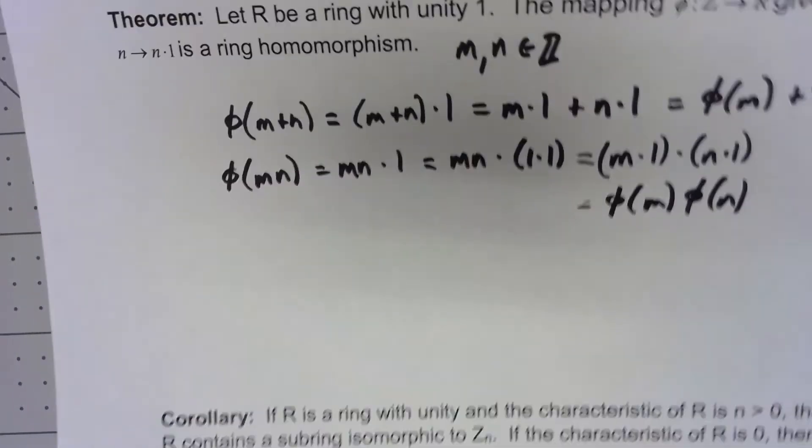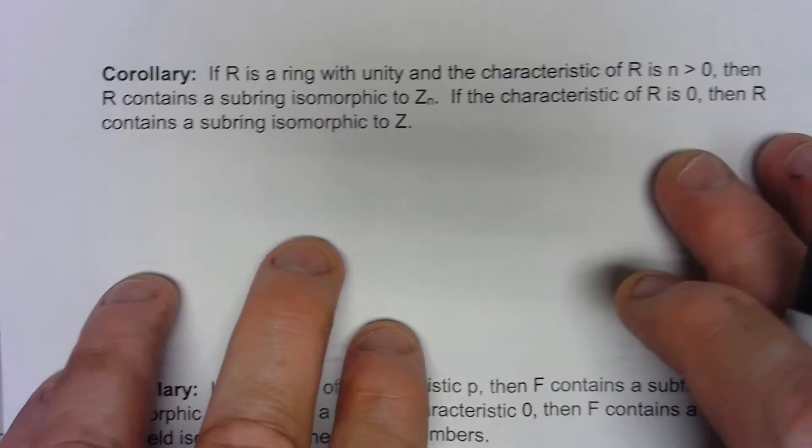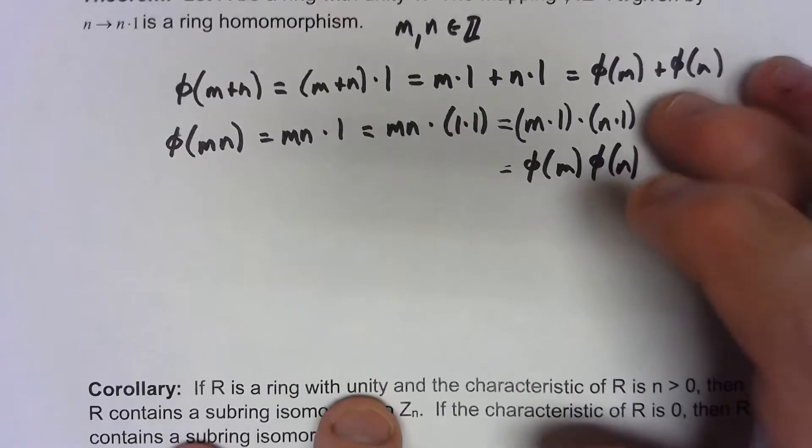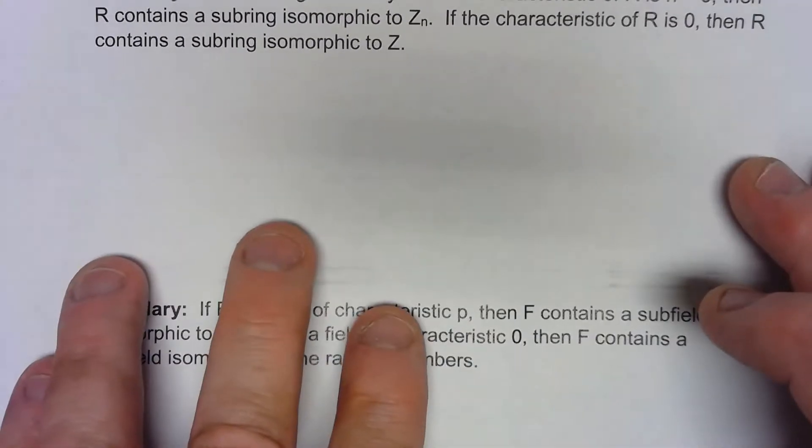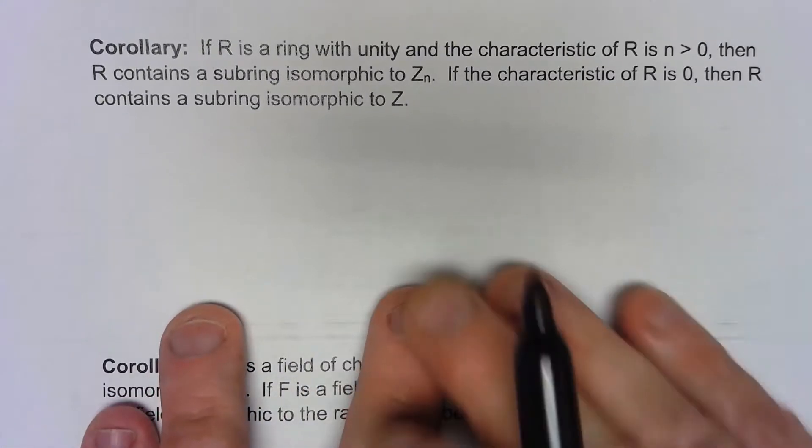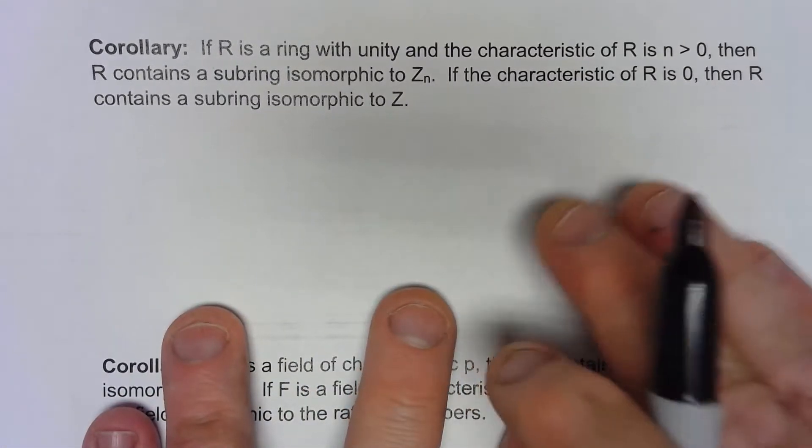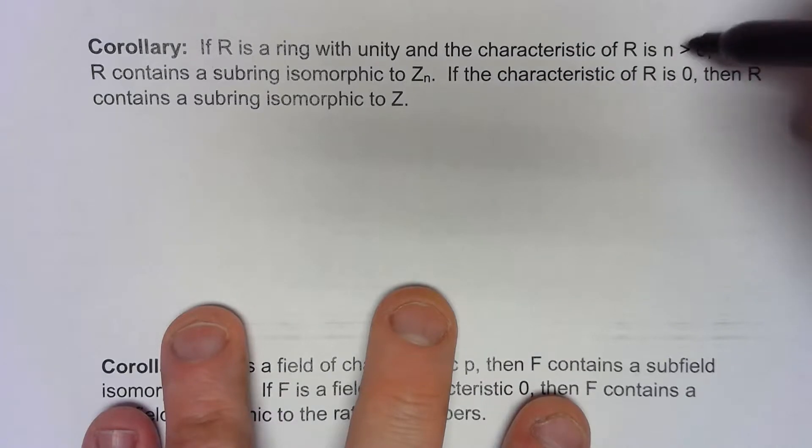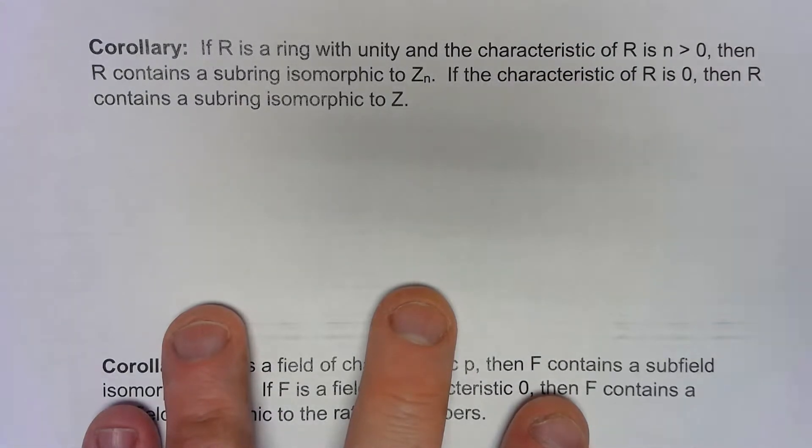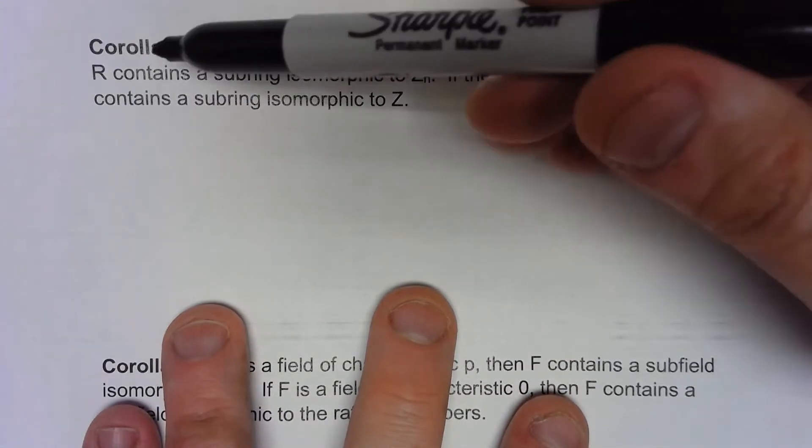Like I said, there's not much to the actual theorem, but there's some important consequences. If we have a ring with unity, and the characteristic of that ring is a positive number greater than 0, then that ring has to contain a subring that's isomorphic to Zn.